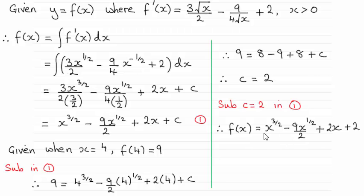And you end up with f of x then being x to the power 3 over 2, minus 9x to the power half over 2, plus 2x, plus 2.